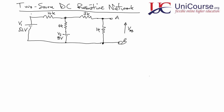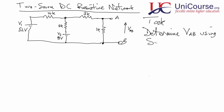In this video we're looking at a two-source DC resistive network. We have battery V1 at 52 volts, another battery V2 at 8 volts, a 4k resistor, another 4k, a 3k resistor, and a 1k resistor on the end, with terminals A and B. Our task is to determine the voltage VAB using the superposition theorem.